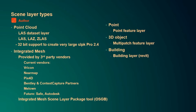So how do I actually author a scene layer? There are different types of scene layers that we support. For PointCloud, you can take a LAS dataset layer in ArcGIS Pro to create a scene layer package, or you can use LiDAR data directly using LAS, LAZ, and ZLAS as input formats. What is new for 2.4 is 32-bit support to create very large PointCloud scene layers — we are really talking terabytes of data that can be shared as PointClouds.